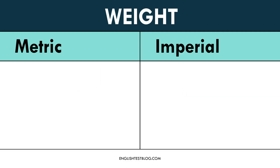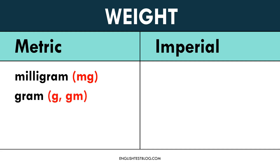Next, let's look at weight. In the metric system, the milligram is a very small unit of weight, used to measure extremely light objects such as the dosage of medicine or small particles. The gram is common for food weights — one gram is equal to 1,000 milligrams. The kilogram is used for heavier objects like a person's weight, and one kilogram equals 1,000 grams.